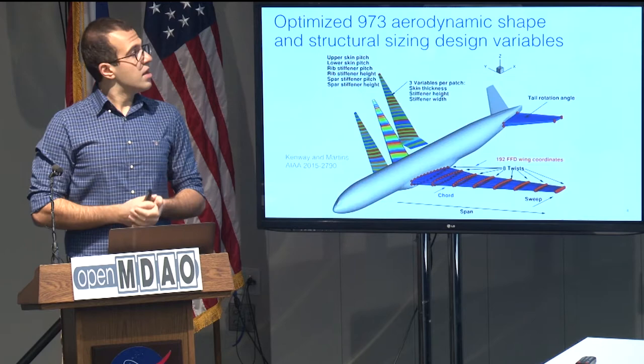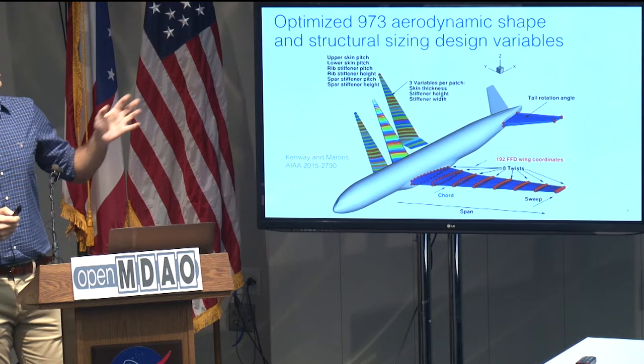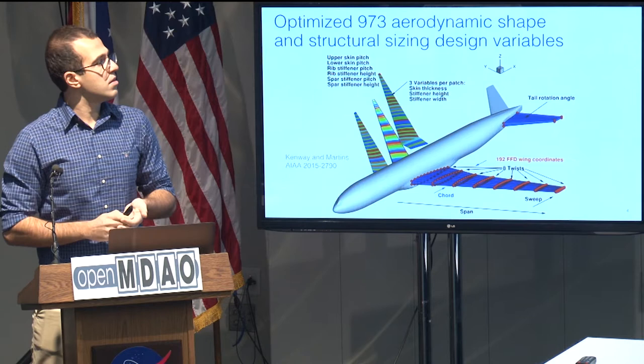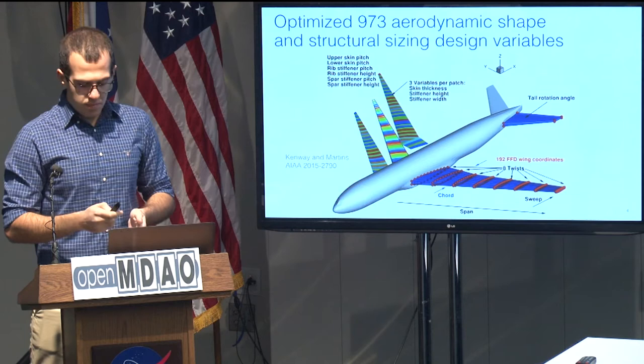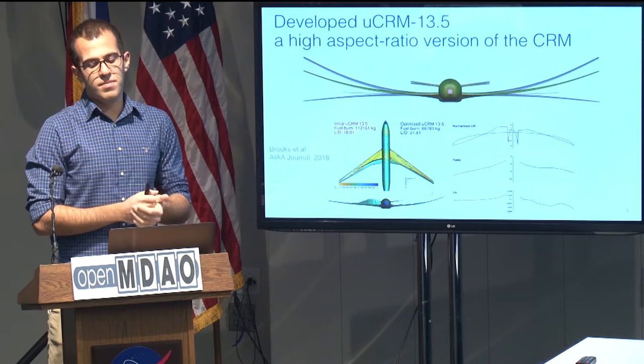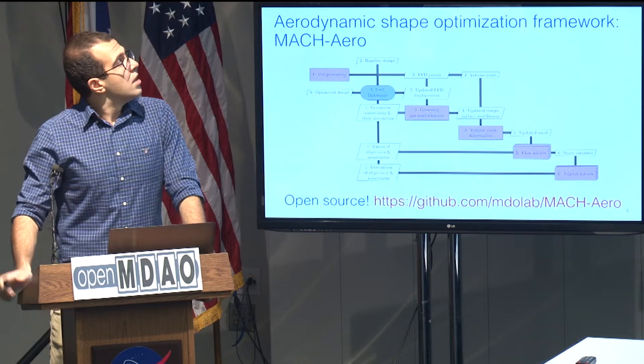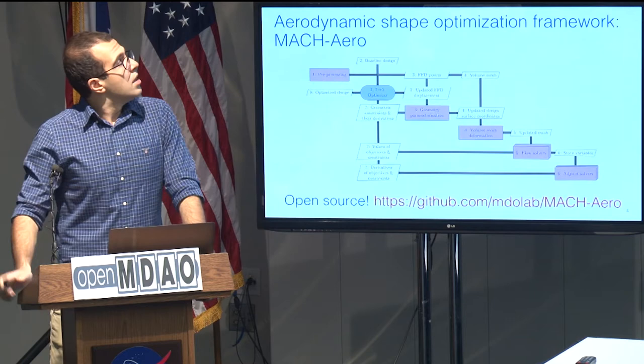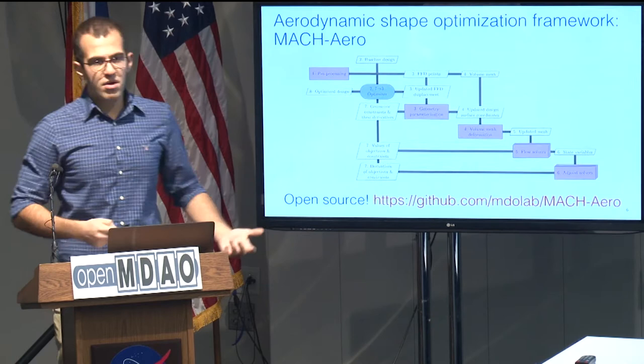To give you a scale on the size of the problems we're working on, we optimize about a thousand aerodynamic shape and structural sizing design variables of the common research model using RANS CFD coupled to a finite element model. We've developed an undeflected common research model 13.5, which is a high aspect ratio version of the CRM developed by Tim here. Both of these models are open source, along with our aerodynamic shape optimization framework called MACH-Aero, available on our GitHub page.